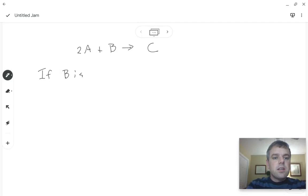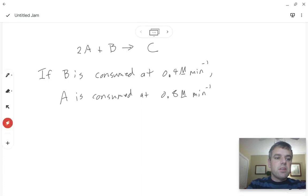So if B is consumed at 0.4 molarity per minute, then A is consumed at 0.8 molarity per minute, because it has a coefficient of 2 in front of it.